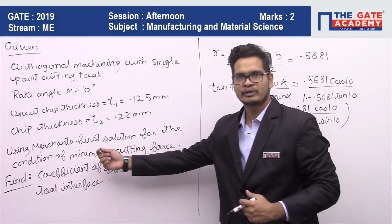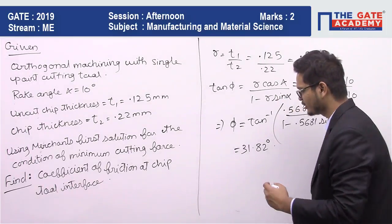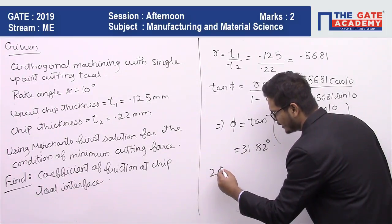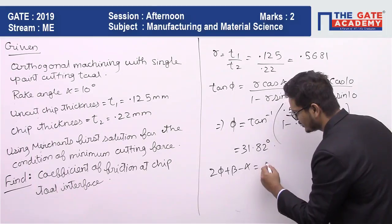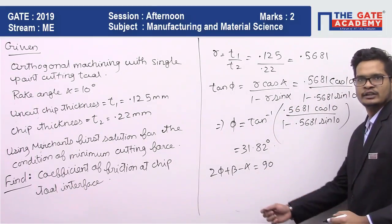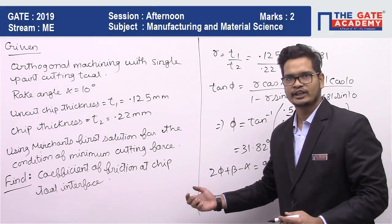Now they are asking us to use the Merchant's criteria. What is Merchant's criteria? 2φ plus β minus α is equal to 90. So from here we will find the value of beta, that is the friction angle.